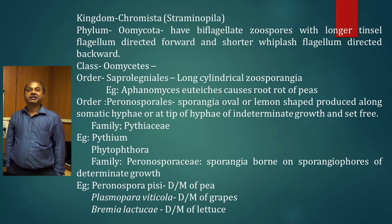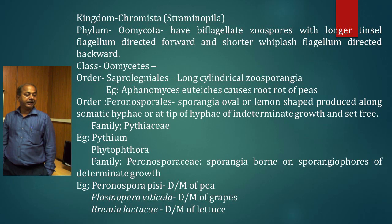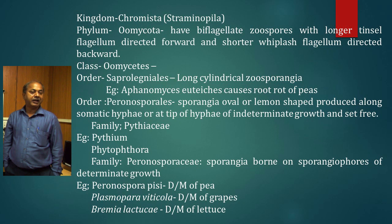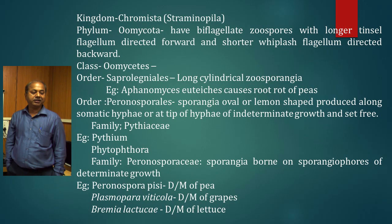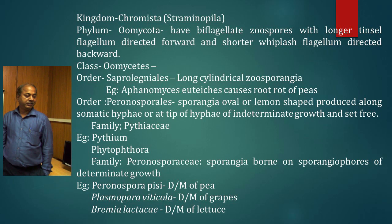The next kingdom is Chromista, also known as Straminopila. Under this kingdom, the phylum Oomycota is characterized by flagellate zoospores with a longer tinsel-type flagellum directed forward and a shorter whiplash flagellum directed backward. Under Oomycota, the class is Oomycetes, which has three orders: Saprolegniales, then Peronosporales.